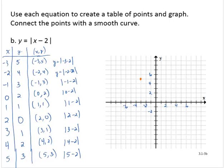And I'll plot the points in orange. Let's see we have negative 3, 5, negative 2, 4, negative 1, 3, 0, 2, 1, 1, 2, 0, 3, 1, 4, 2, 5, 3.